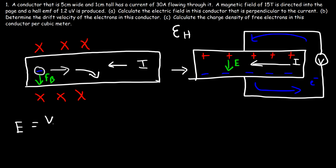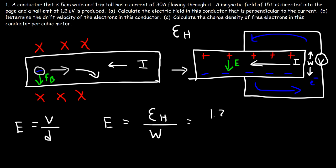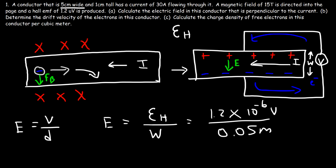The electric field is equal to the voltage divided by the distance. In this case the voltage is the Hall EMF and the distance is the width of the conductor. So it's 1.2 microvolts (1.2 × 10⁻⁶ V) divided by the width of 5 centimeters (0.05 m). The electric field is 2.4 × 10⁻⁵ volts per meter. That's the answer for part A.